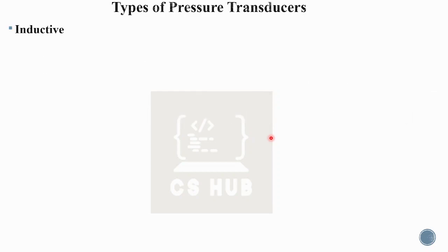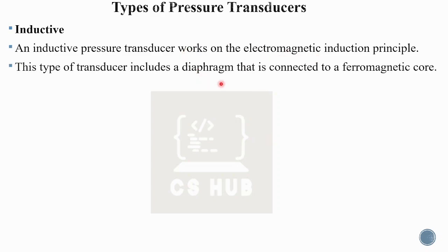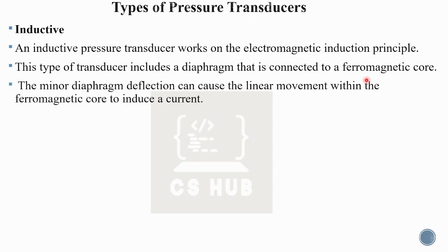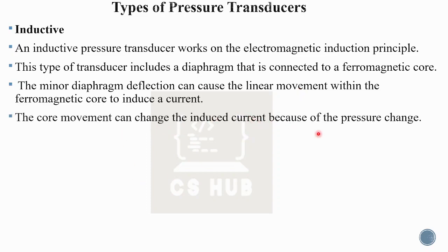The inductive transducer works on the electromagnetic induction principle. The diaphragm is connected to a ferromagnetic core. A minor diaphragm deflection causes linear movement of the ferromagnetic core, inducing a current. The change in the diaphragm causes a change in the ferromagnetic core, resulting in a change in flux and a change in current. The core movement changes the induced current because of the pressure change, and the change in current can be converted to a utilizable signal.